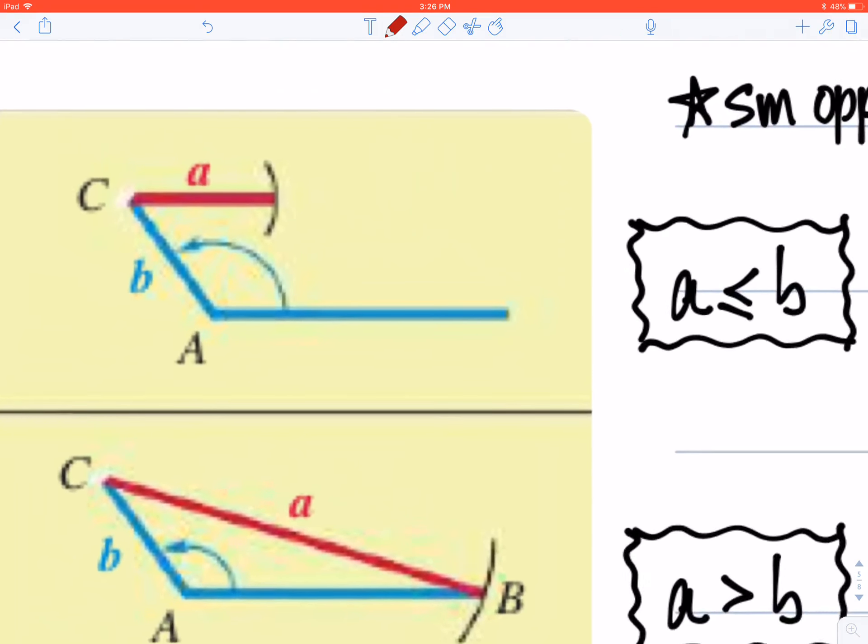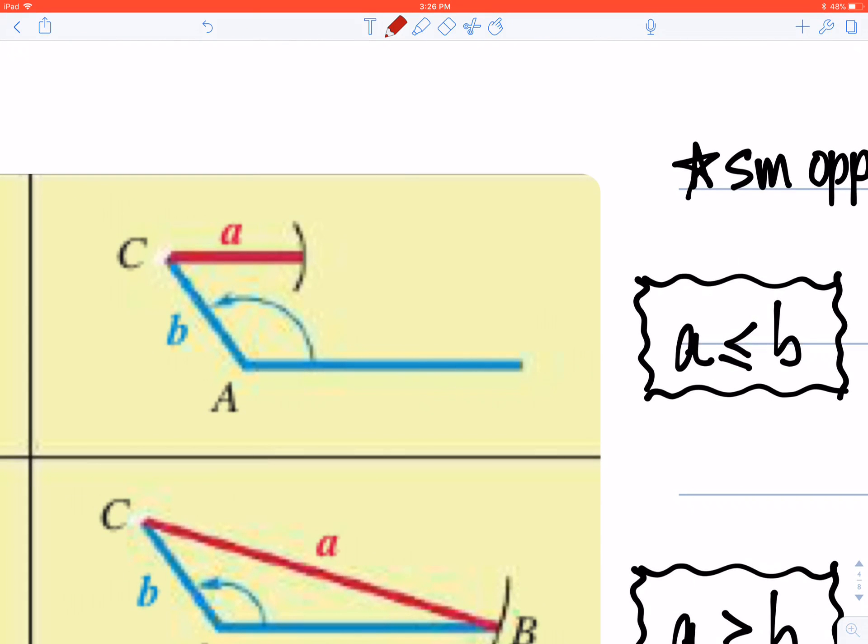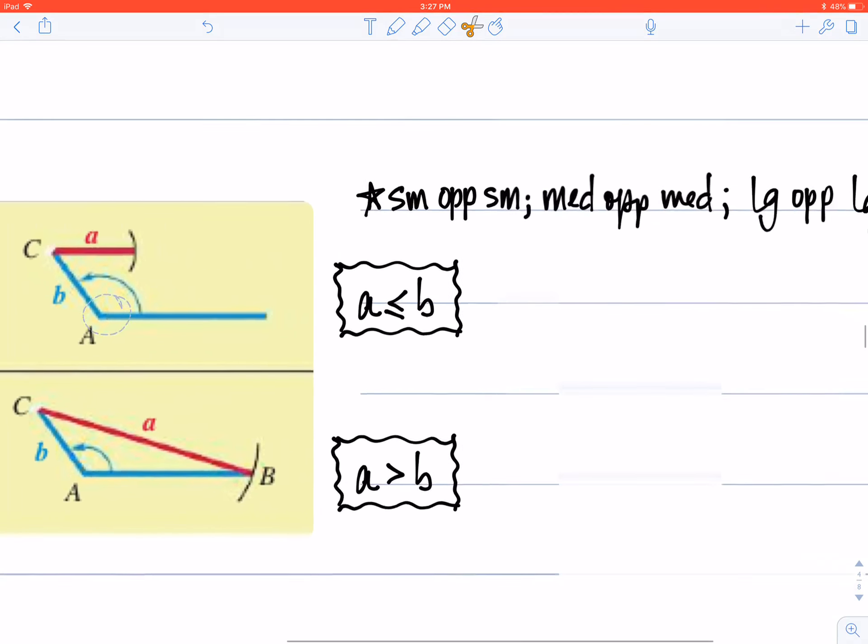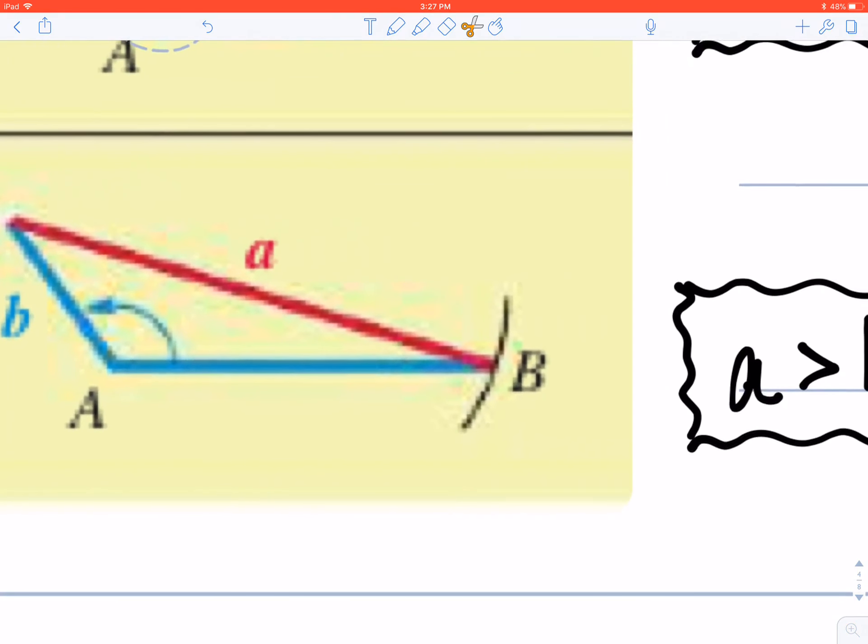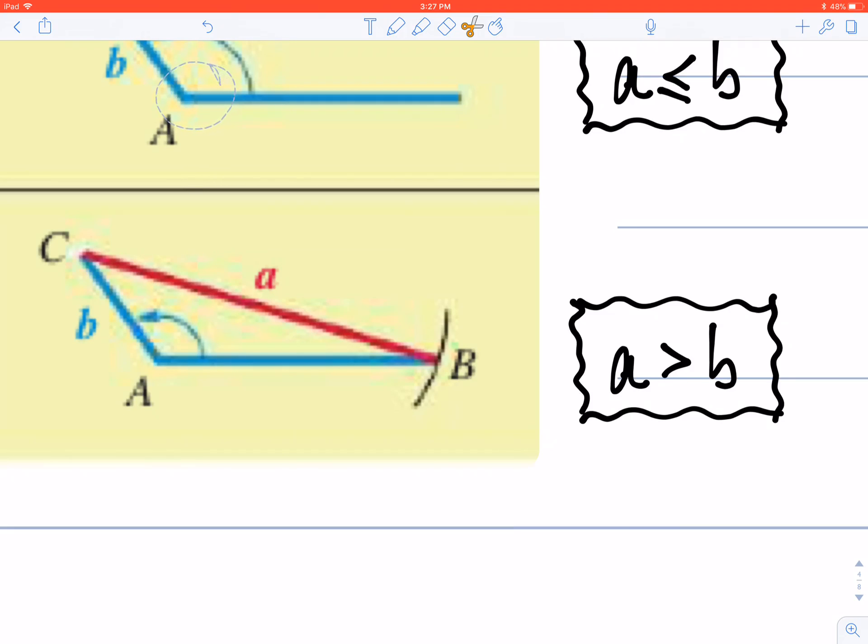So when you look at case number one here, because side a is shorter than side b, if this is the obtuse angle right here, then it has to be opposite the largest side. So the fact that a is not the largest side tells me there are no solutions here whatsoever. And you can see that there in your chart, there's no solutions.